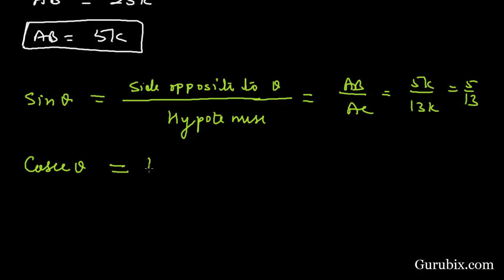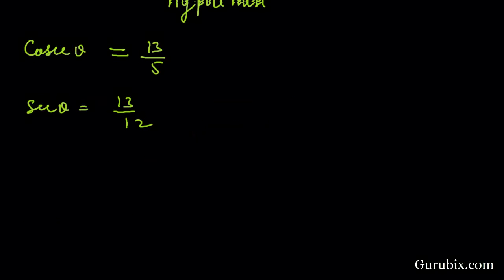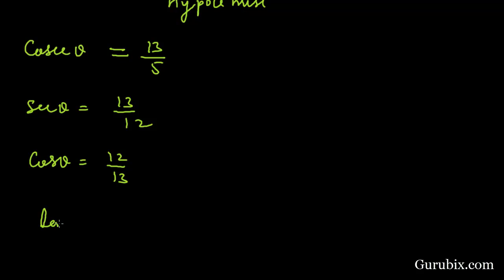Cosecant theta is the reciprocal of sine theta, so it equals 13 over 5. We are given sec theta as 13 over 12, therefore cos theta equals 12 over 13, since cos theta is the reciprocal of sec theta.